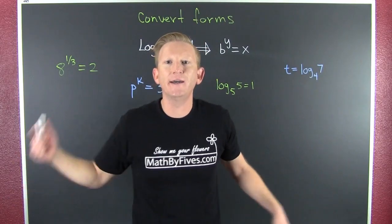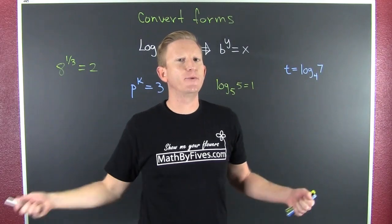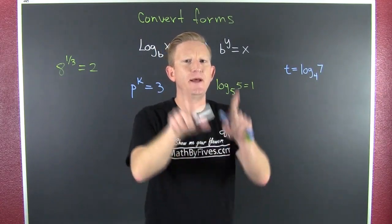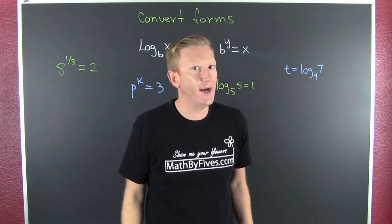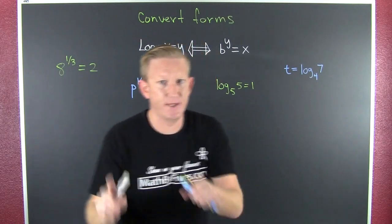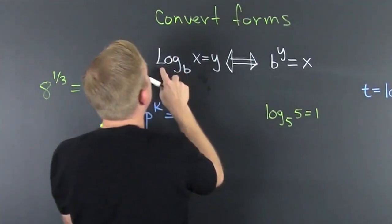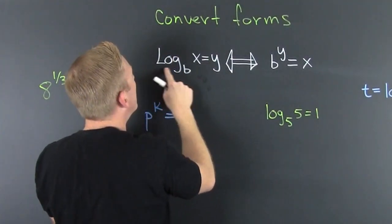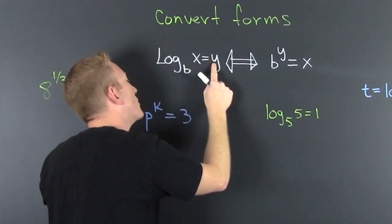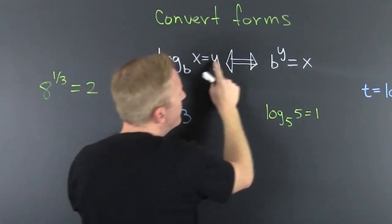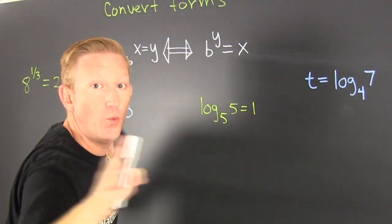Oh boy! Let's convert between logarithms and exponentials. In order to do that we need to see that logarithms are defined in terms of exponentials. So if we come on up in here: the log base b of x is y if and only if b to the y is equal to x.